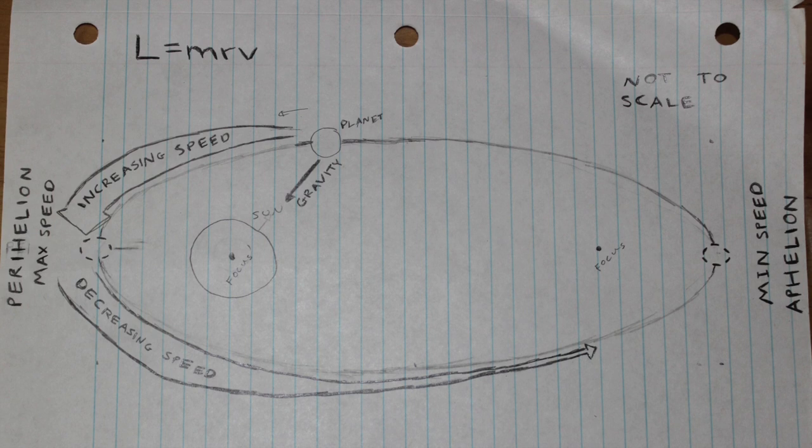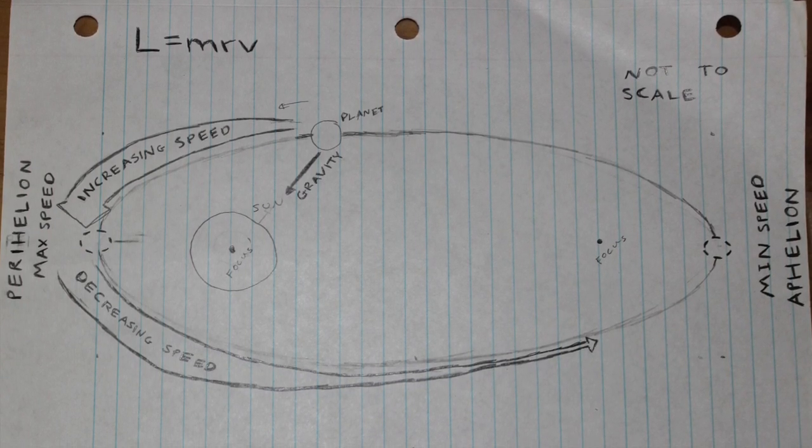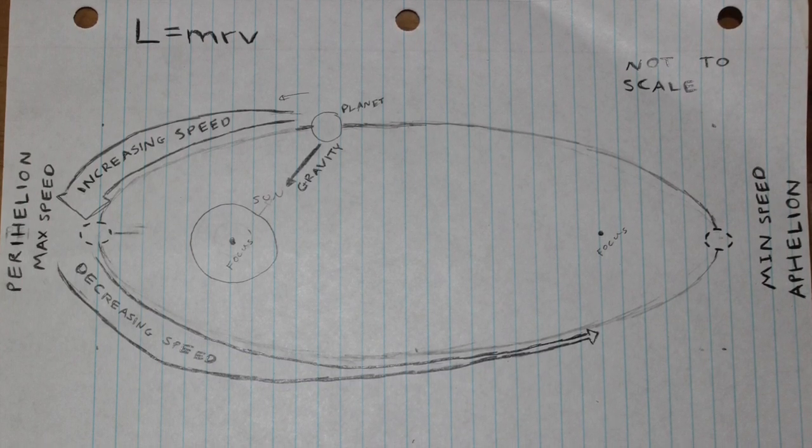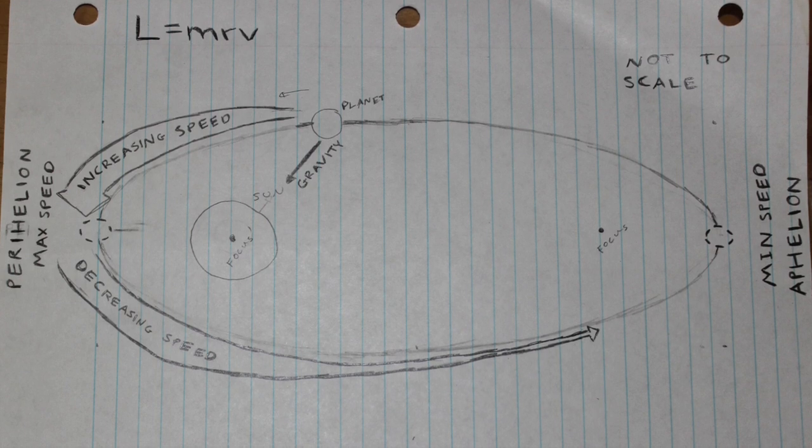Now in a given system, the angular momentum stays constant, unless there is a change in the net torque of the system. In this case of a planet orbiting the sun, we don't have any net change in torque, so our angular momentum will stay constant.